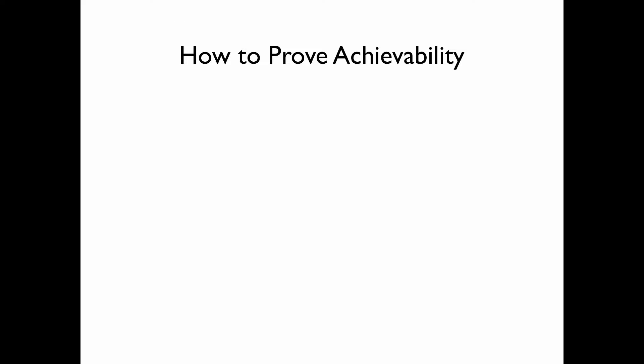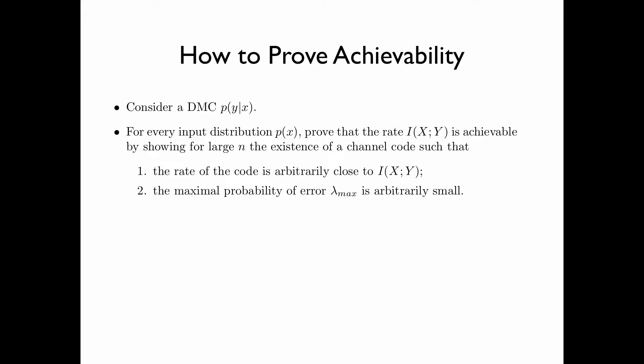Here are the steps for proving the achievability. First, we consider a DMC with transition matrix P(Y|X). For every input distribution P(X), prove that the rate I(X;Y) — the mutual information between the input and the output — is achievable by showing that for large N, there exists a channel code such that: first, the rate of the code is arbitrarily close to I(X;Y); and second, the maximum probability of error lambda_max is arbitrarily small.